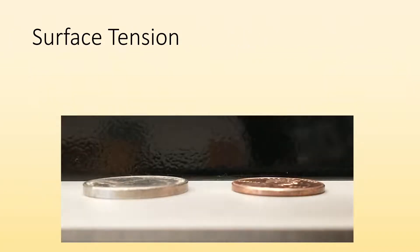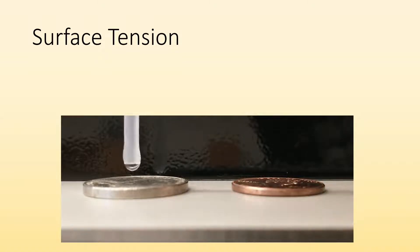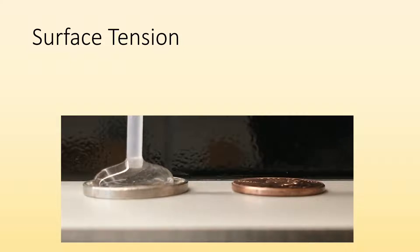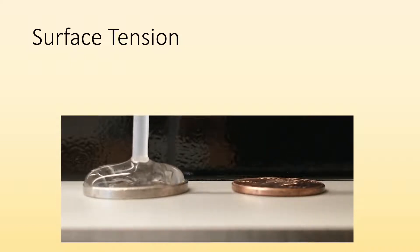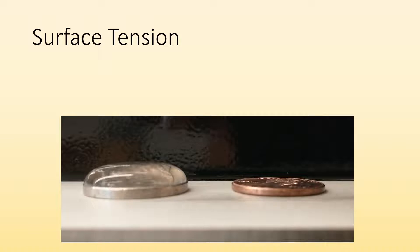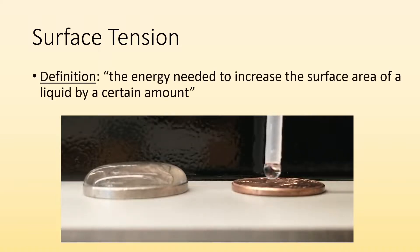So surface tension. Here's a little demo you could do at home. If you got an eyedropper and a coin, you can slowly put water on top of a coin and you can see it'll bead up and form like a bubble instead of spreading out and running over the sides of the coin.